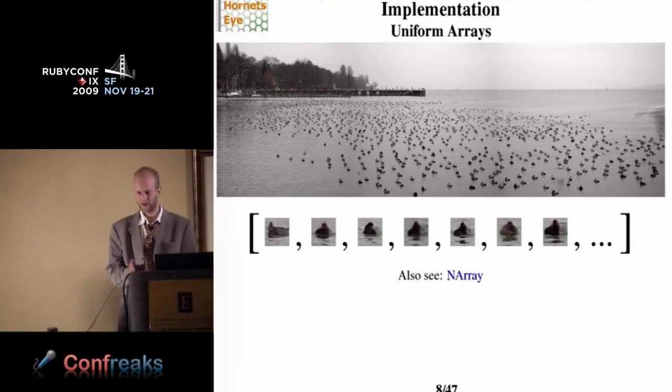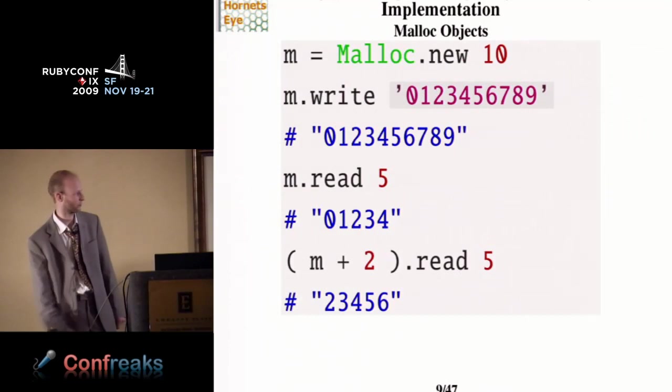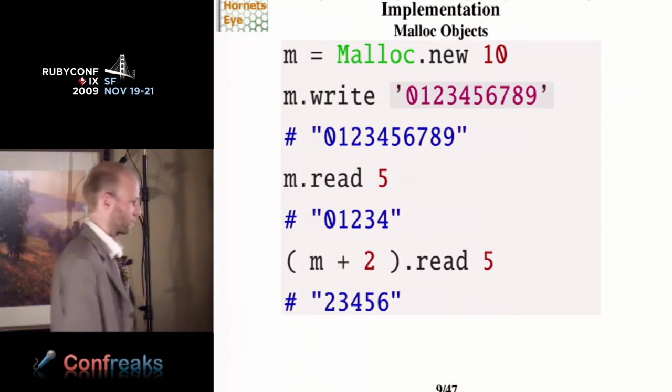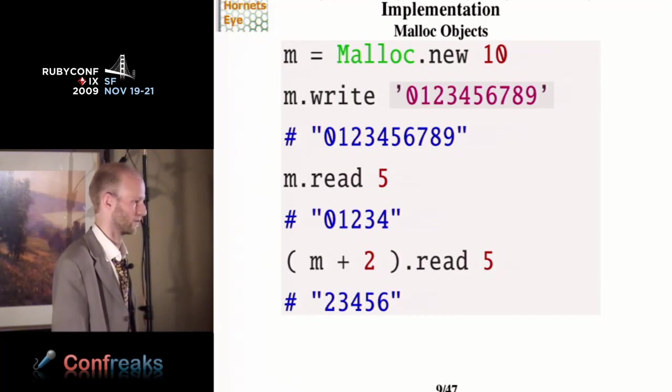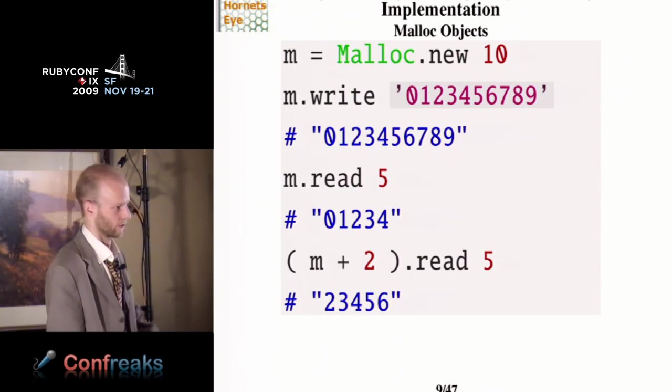And now I'm going to show you how this is done, it's actually not very difficult. The core of the library is very small. You start by defining a C extension, which defines a class, a malloc class. And this malloc class, you use it to, for example, allocate 10 bytes of memory, and then you can write a Ruby string to the memory, where you can read back 5 bytes of memory and get the content as a string. And you can do pointer operations, like n plus 2, and if you read 5 bytes then, it will ignore the first 2 bytes.